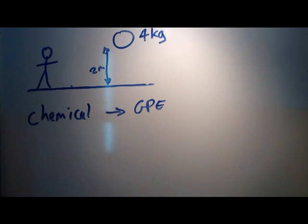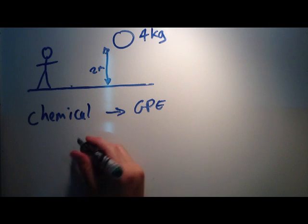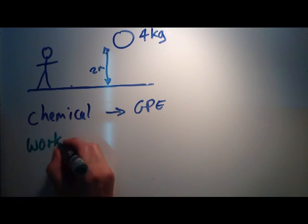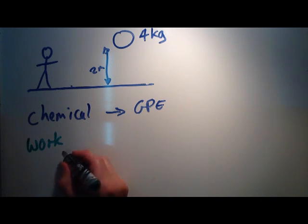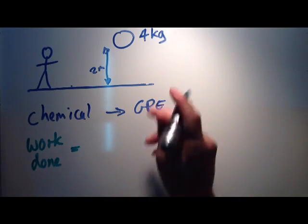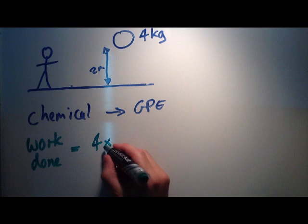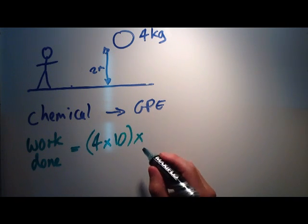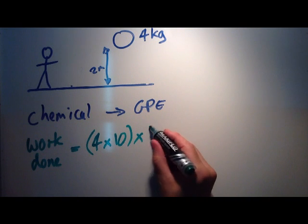If you can remember the formula for work done, the work done is equal to the force times the distance over which that force is moved. So the work done is equal to the force here—this is the weight of the ball. Well, that's the mass, so the weight of the ball is going to be 4 times by gravity, which is 10. That gives us the weight, times by the distance that force is moved, which is 2 metres.